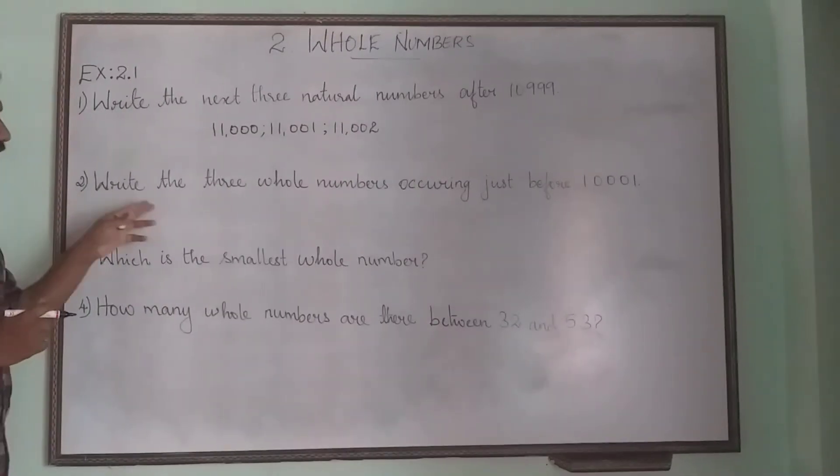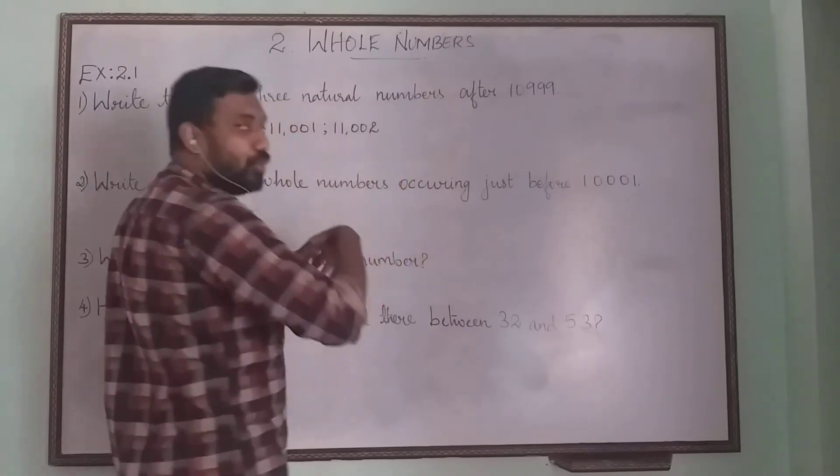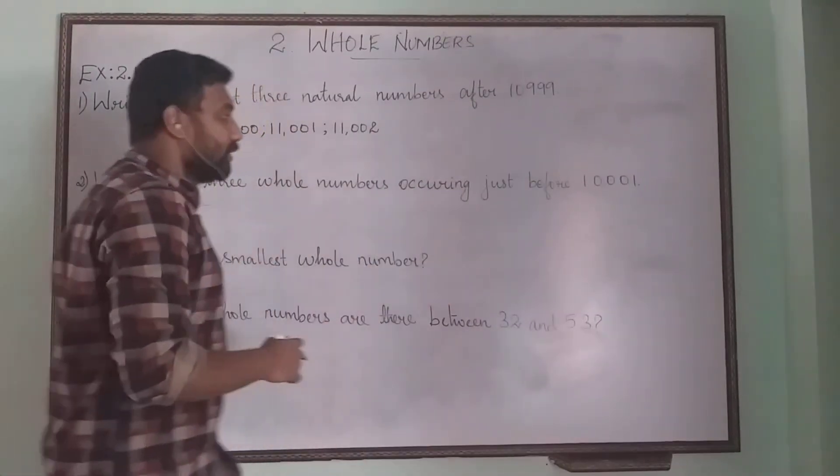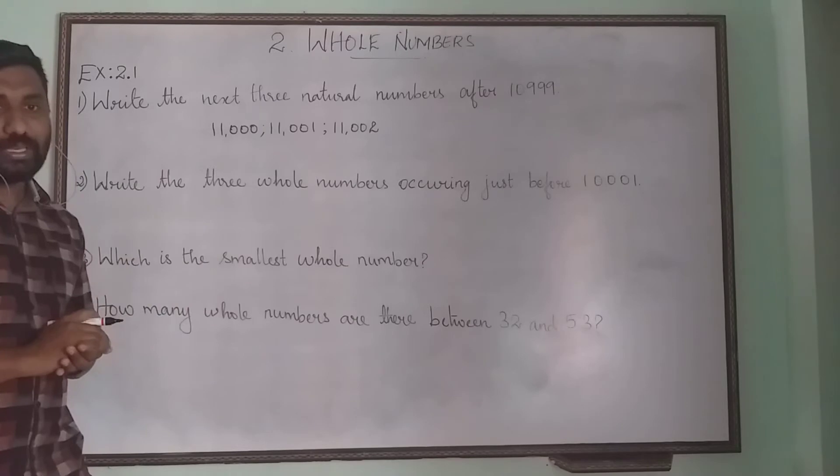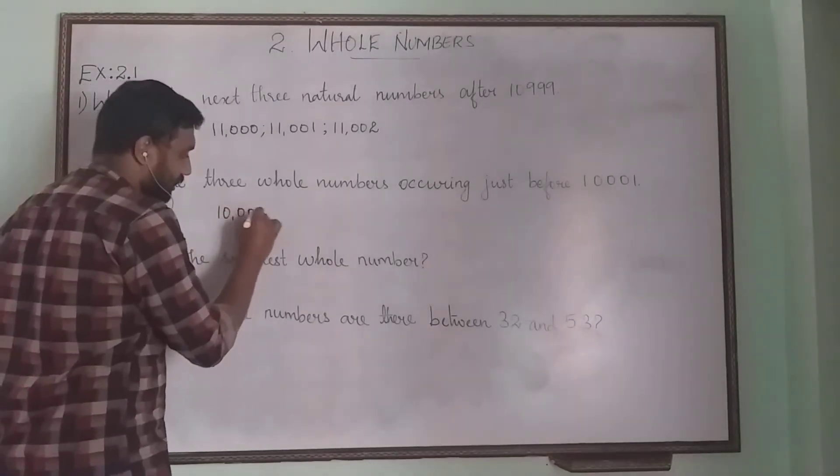Question 2: write the three whole numbers occurring just before 10,001. So you have 10,001, before that what will be the number? It will be 10,000. So the first number is 10,000.